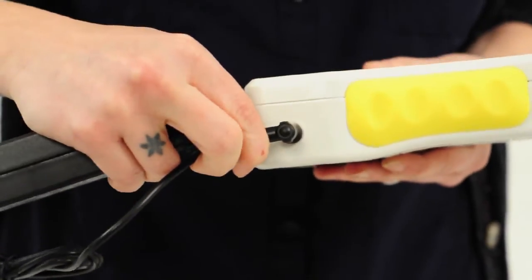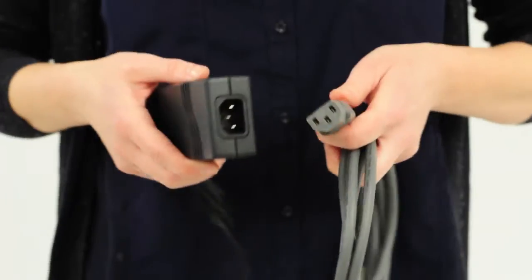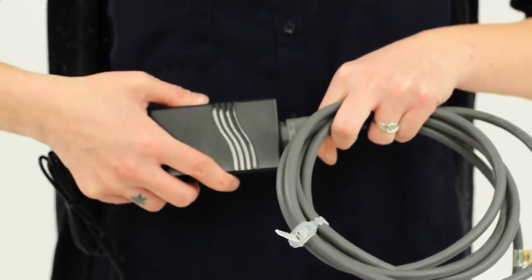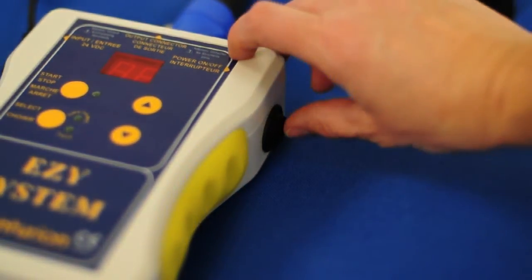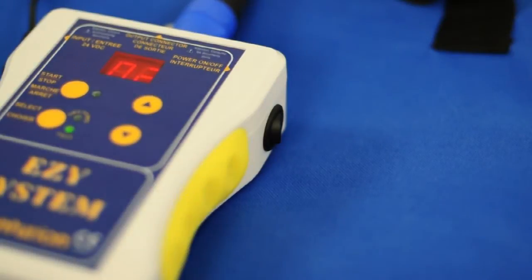Next, connect the power adapter to the EZ controller and then the power cord to the adapter. When your EZ system has been plugged into an outlet, turn the controller on by pressing the black switch on the side.